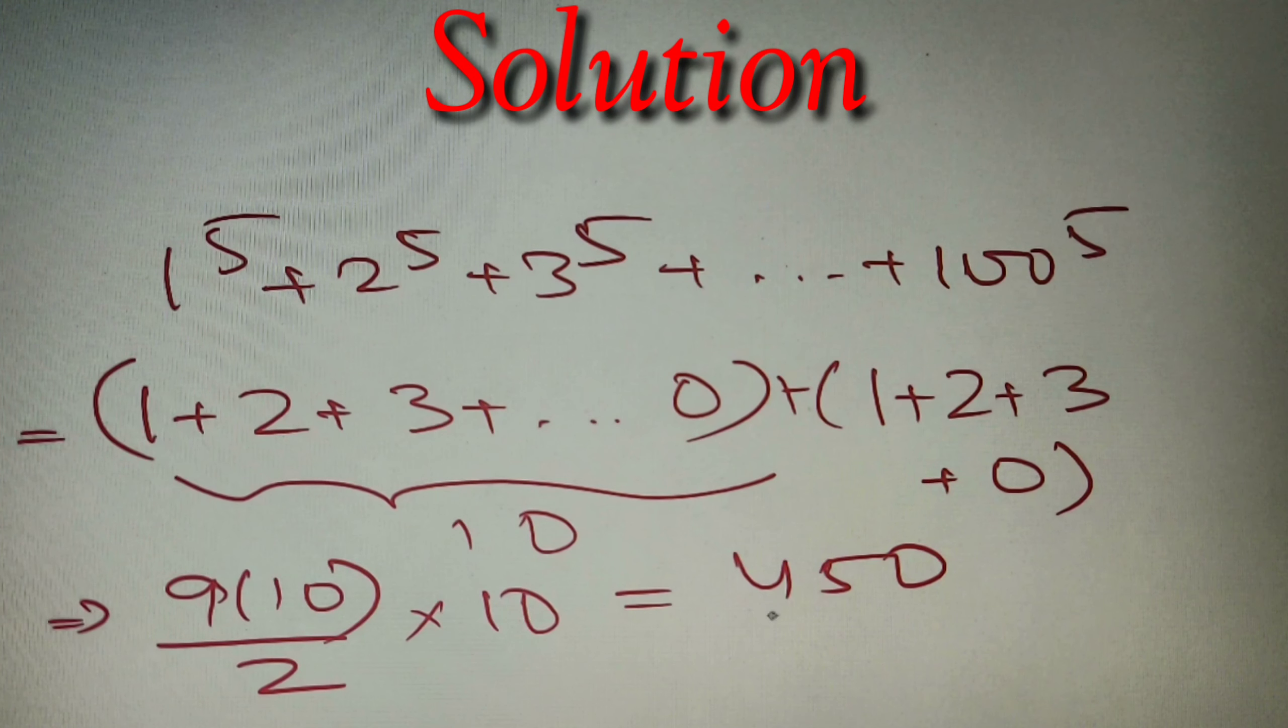We have got the final sum as 450, and the unit digit of this sum is equal to 0. According to the given question, our answer is equal to 0, which is option number A. Our final answer is option number A: 0.